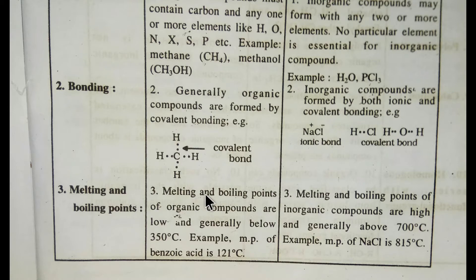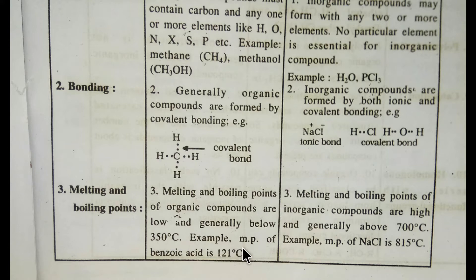In the case of organic compounds, melting and boiling points are low and generally below 350 degrees Celsius. For example, the melting point of benzoic acid is 121 degrees Celsius, which is below 350 degrees Celsius.